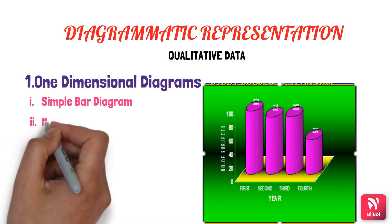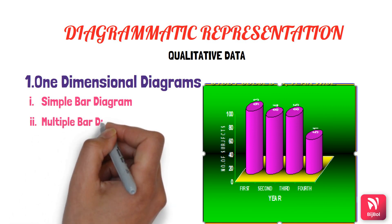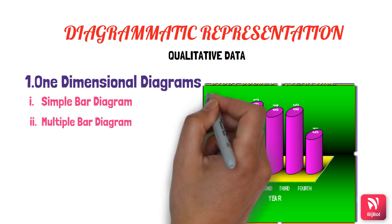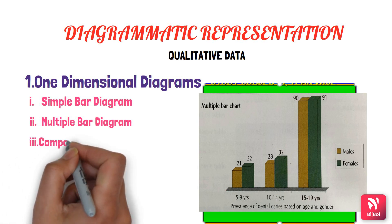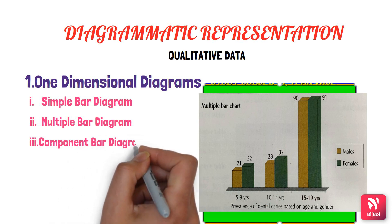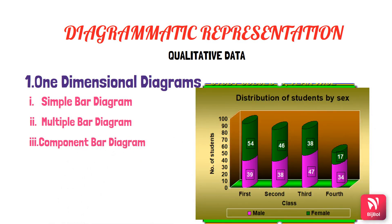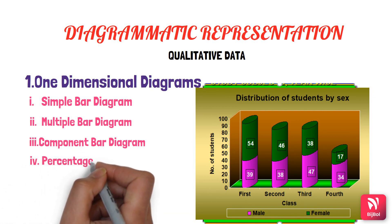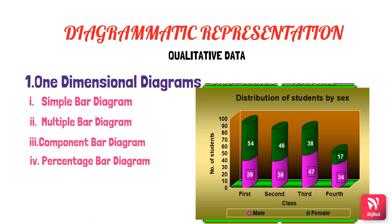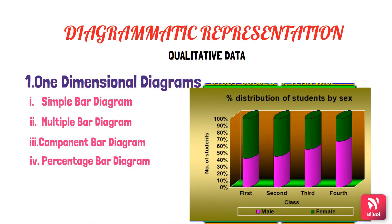Next comes the multiple bar chart, which is similar to the simple bar except that you have many variables — here two variables, age and gender. Then there is the component bar diagram, where individual bars are divided into two or more parts based on gender and year. The percentage bar diagram is the same as the component bar, only the information is presented as a percentage.